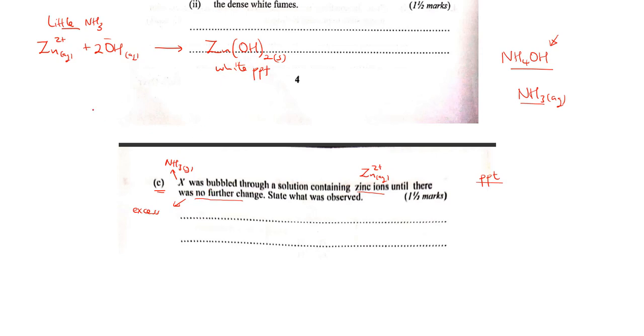However, since they have said until no further change, we shall have to bubble excess ammonia. Now when we bubble excess ammonia, the initially insoluble hydroxide of zinc will dissolve by forming a complex ion. Let's use ions for simplicity. This zinc hydroxide, if we add excess, will dissolve by forming a complex ion which is tetraammine zinc [Zn(NH3)4]2+. This ion is the reason why we shall see white precipitate, but this ion is soluble.